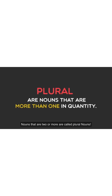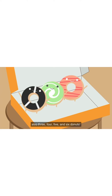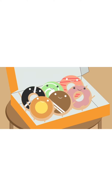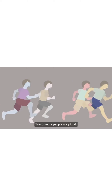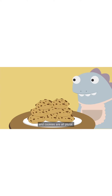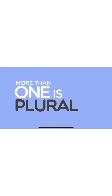But what if there are more than one? Nouns that are more than one in quantity are called plural nouns. Two donuts are plural — also three, four, five and six donuts. Two or more dogs are plural. Two or more people are plural. Two or more books, pencils, and cookies are all plural. One is singular and more than one is plural.